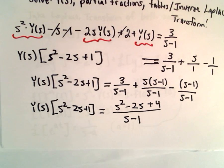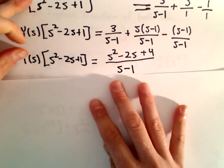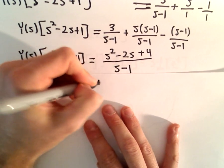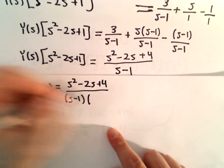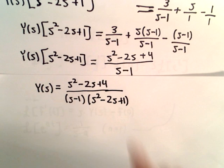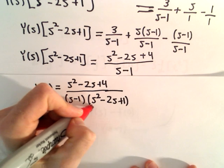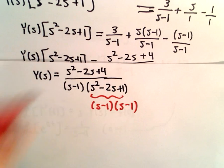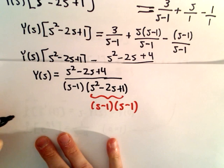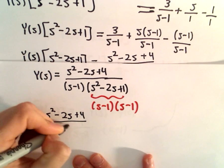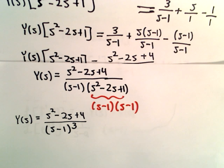Now, simply solving for Y of s, I'm going to divide both sides by s squared minus 2s plus 1. That gives us Y of s equals s squared minus 2s plus 4 over s minus 1 times s squared minus 2s plus 1. Notice that s squared minus 2s plus 1 factors as s minus 1 times s minus 1, so I'm going to rewrite this as Y of s equals s squared minus 2s plus 4 over s minus 1 to the third power. So we have now solved for Y of s.